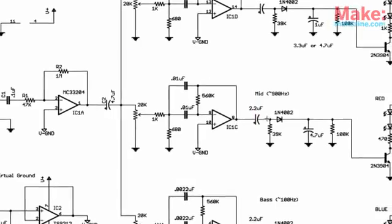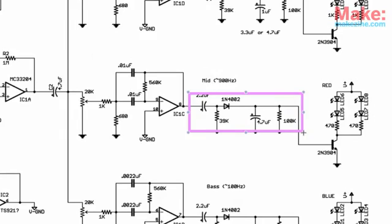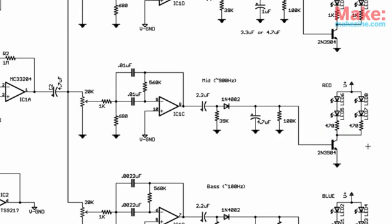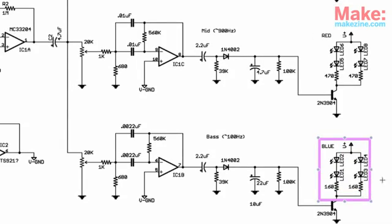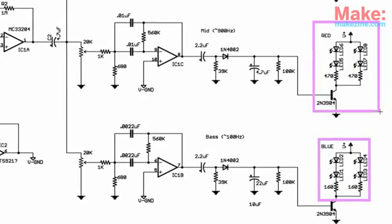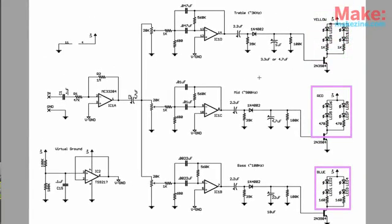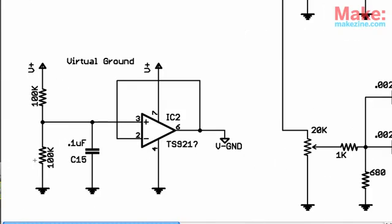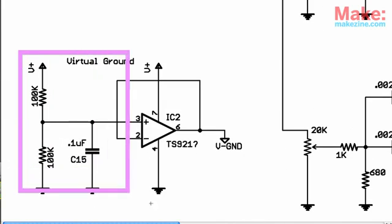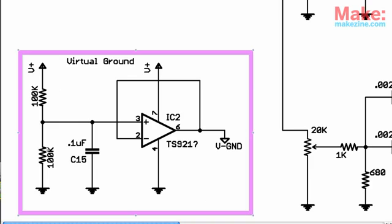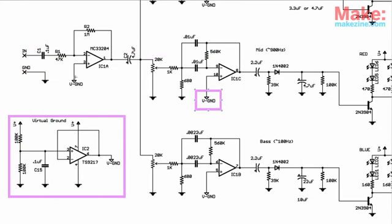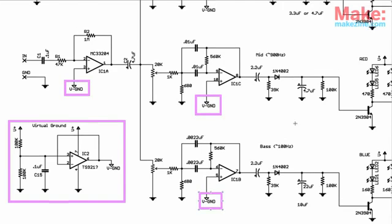From there, each output is conditioned, referenced to ground, and sent to the base of a transistor, which controls power to a group of four LEDs — blue LEDs for the bass, red LEDs for the mid-range, and yellow LEDs for the high-end. One final op amp, known as IC2, outputs a reference point between our positive supply voltage and ground, feeding this to all its buddies to keep them properly aligned and well-centered.